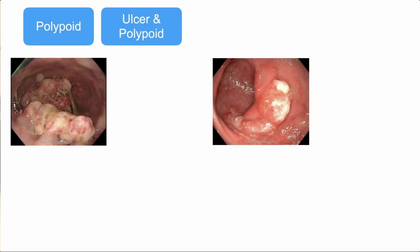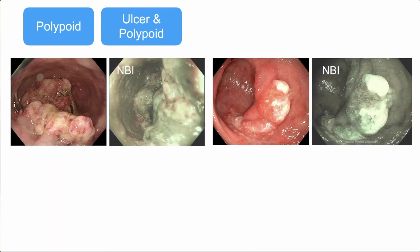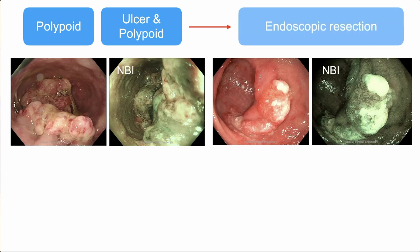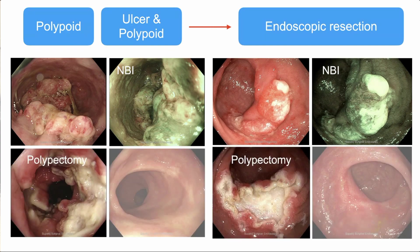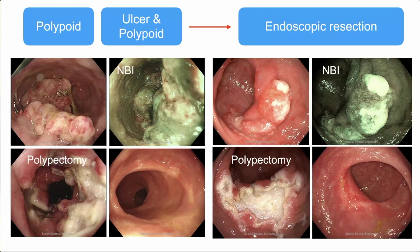For the two types of solitary rectal ulcer lesions — polypoid and mixed type — we confirm the diagnosis with NBI narrowband imaging, perform endoscopic resection for the polypoid lesion by polypectomy, and this is the follow-up result.